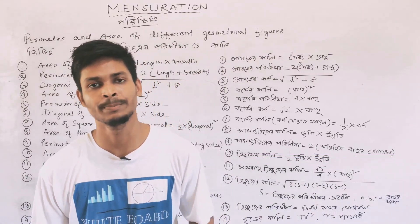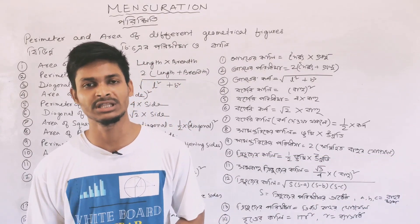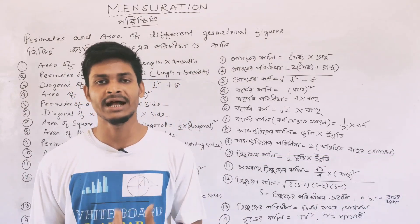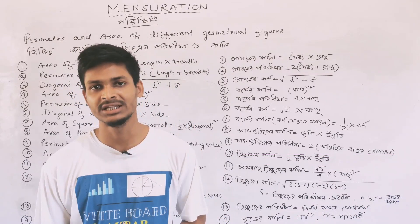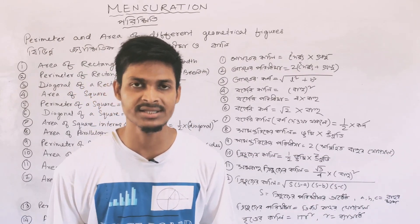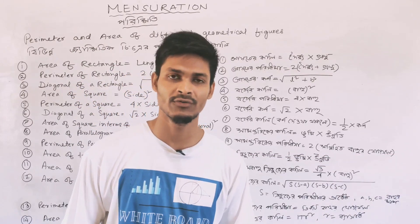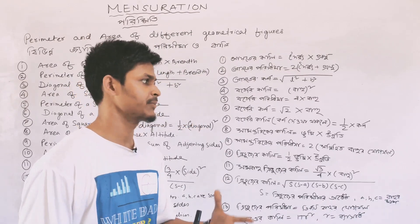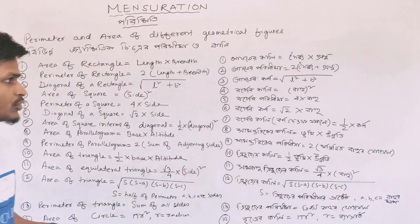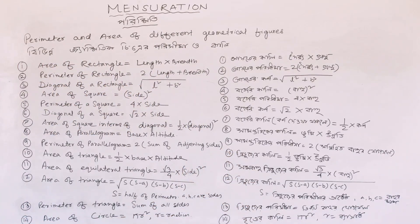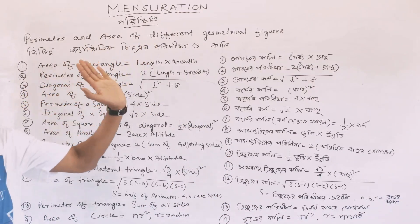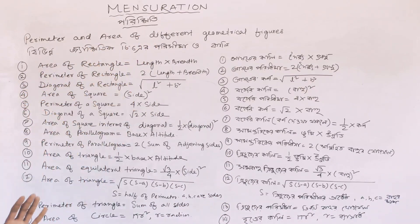When we are learning math, we will learn the formula. The first topic is the perimeter and area of different geometrical figures.